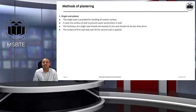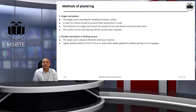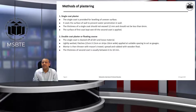The surface of the first coat is kept wet till the second coat is applied. The second method is double coat plaster, also called the floating course. The single coat is cleaned of all dirt and loose material before the double coat is applied. Lightly weighted patches are applied at suitable spacing to act as gauges, mortar is thrown with a mason's trowel, sprayed and rubbed with a wooden float to make it smooth. The thickness of the second coat is usually between 6 to 10 mm.